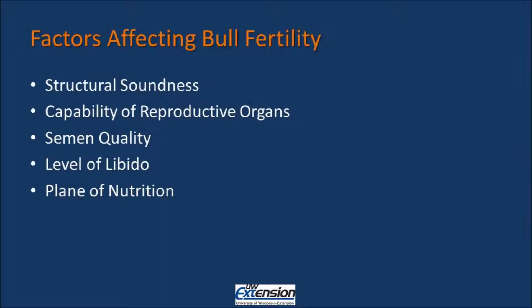There are five different factors that affect bull health and fertility. The first is structural soundness. The second is the capability of the reproductive organs. The third is the semen quality. Fourth, level of libido. And fifth, plan of nutrition. We will discuss each one of these in more detail.